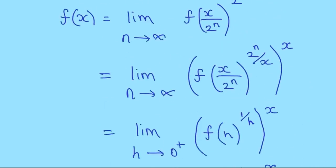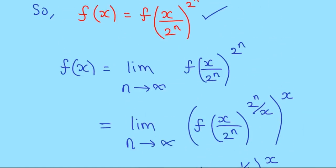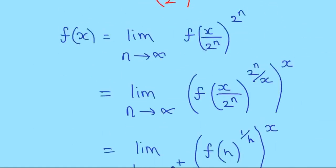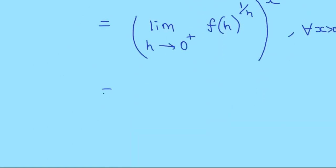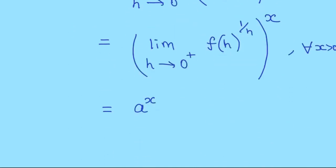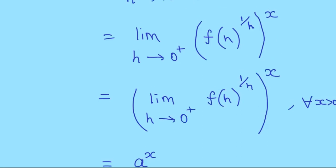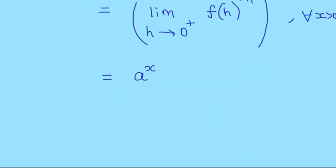We know f(x) exists for a particular value of x, so this limit must exist. Let that limit be a. Then f(x) = a^x. Note that a cannot be negative, because if it were, a^x would have imaginary values, but the codomain is the real numbers. So there exists a non-negative value a such that f(x) = a^x for all x > 0.